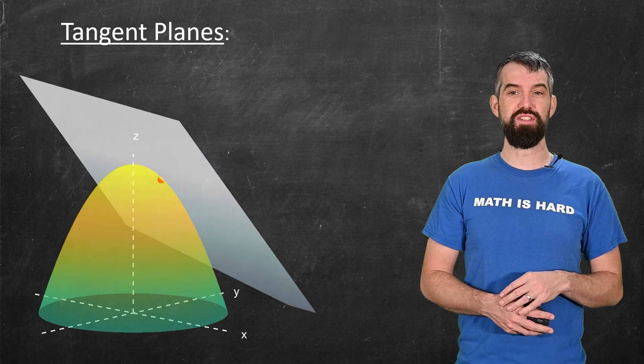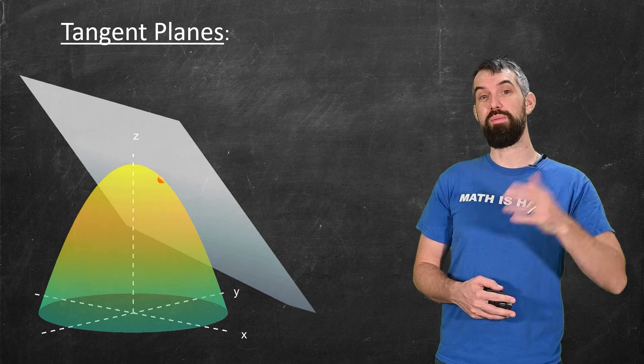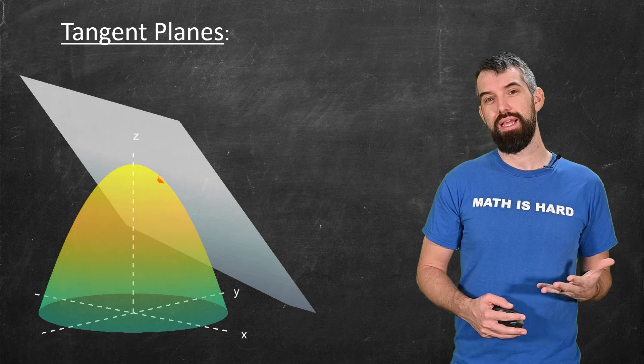You could also go to surfaces, and instead of a tangent line, you might get a tangent plane. This is going to be relevant for things like optimization. So that was for derivatives.